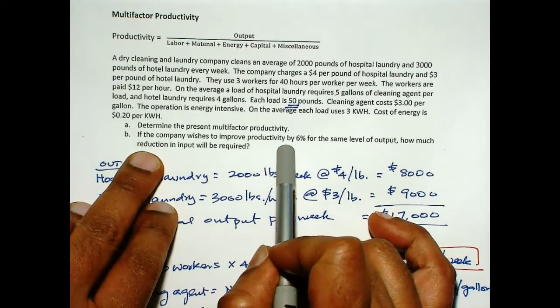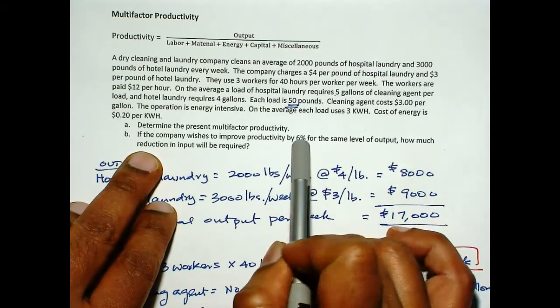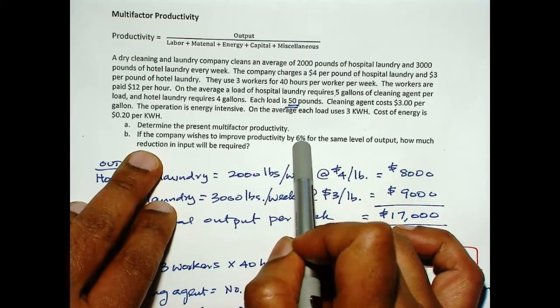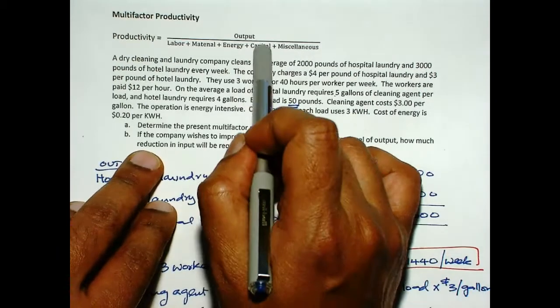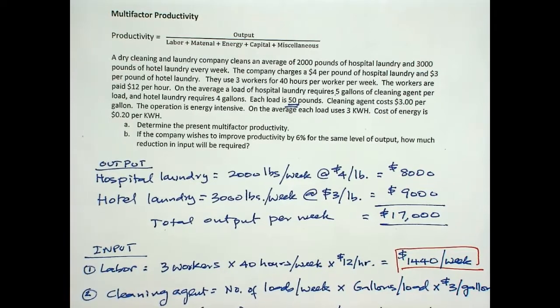Now, here what we want to do is, this question says that we want to keep the output the same and if you want to achieve 6 percent improvement in productivity, how big of a reduction in input will be needed?